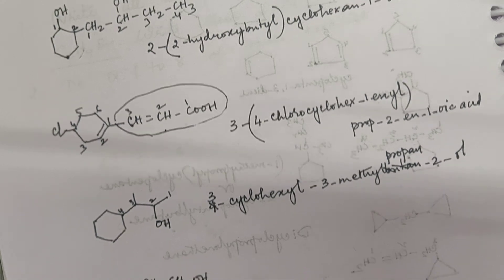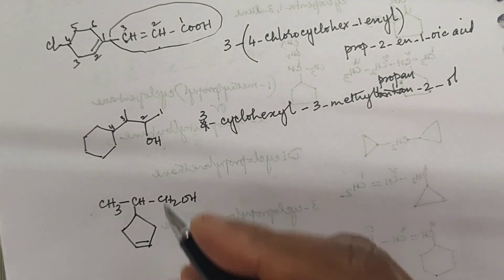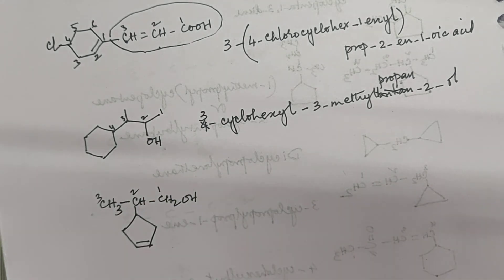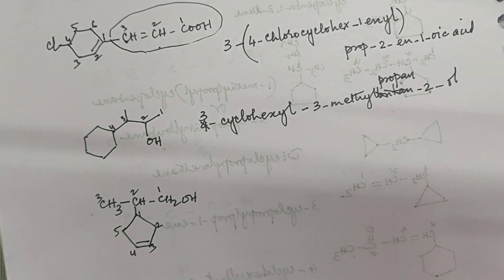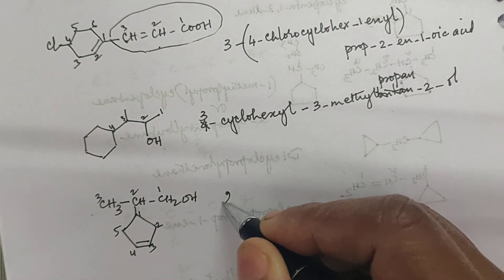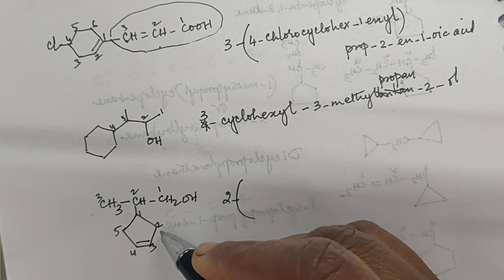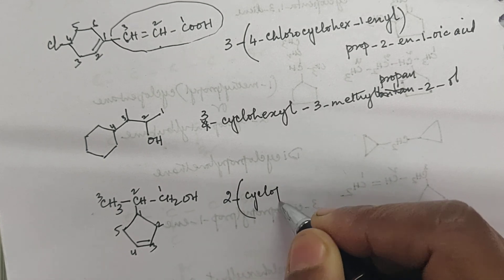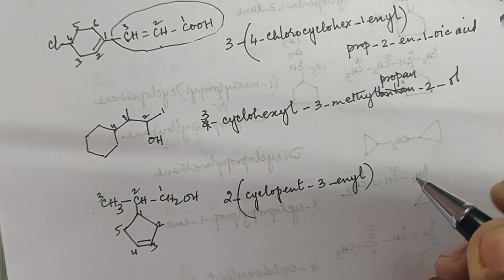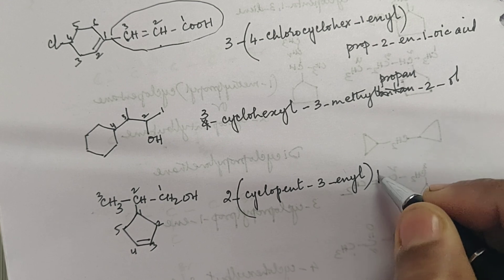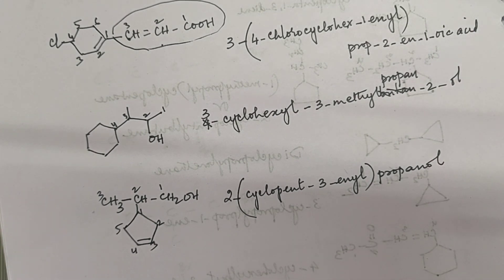For the last compound: the principal functional group is again an alcohol. Numbering the chain as 1-2-3, and the ring 1-2-3-4-5. At position 2 of the chain there is the ring substituent. You open the bracket: cyclopent-3-enyl, then close the bracket, and the compound is named as 2-(cyclopent-3-enyl)propan-1-ol.